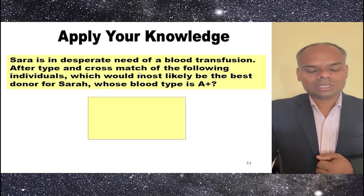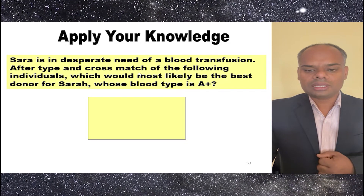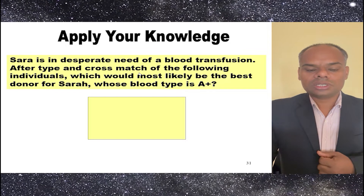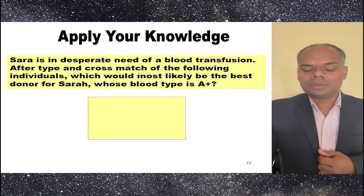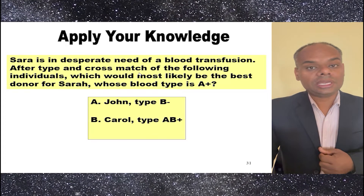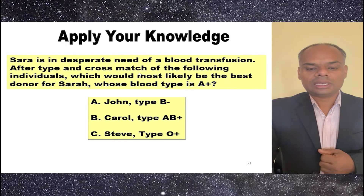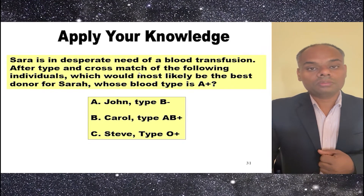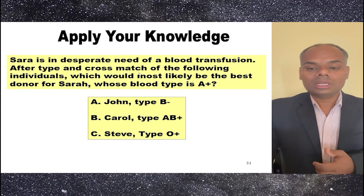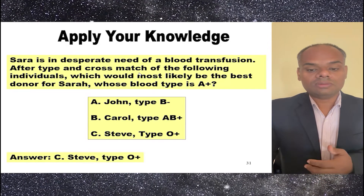Next question: Sarah is in desperate need of a blood transfusion. After type and cross match, which of the following individuals would most likely be the best donor for Sarah, whose blood type is A positive? John: type B negative. Carol: type AB positive. Steve: type O positive. Since O is a universal donor, the answer is Steve, type O positive.